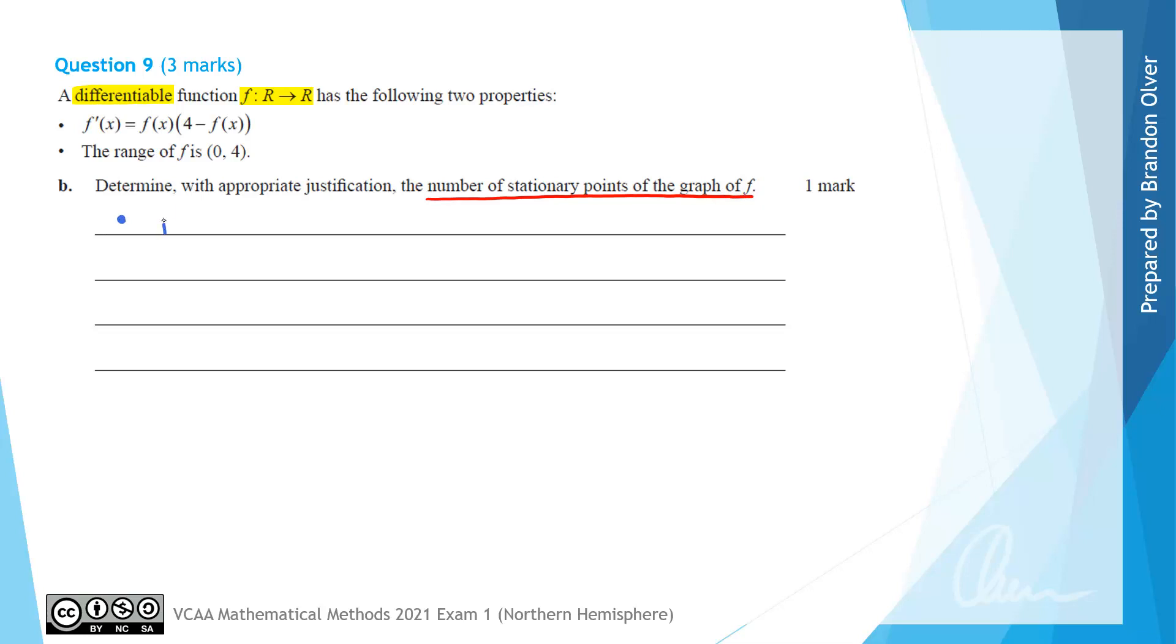I'm going to acknowledge that f(x) has a range of, and up above, that's the second dot point, it's 0 to 4, both not included. And the thing to note here is that it's non-zero for all values of x.